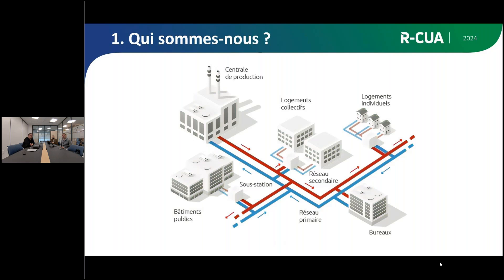Les bâtiments alimentés ne contiennent bien souvent plus d'équipements de chaufferie, plus de cheminées, plus de centrales de production. C'est uniquement une sous-station — un point de livraison de calories — qui se substitue à la chaufferie usuelle. Cela permet d'avoir un point de distribution distant des bâtiments parfois de plusieurs kilomètres, voire de dizaines de kilomètres.